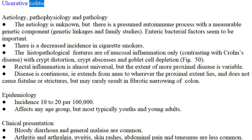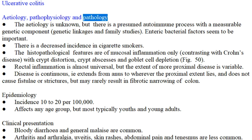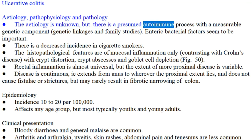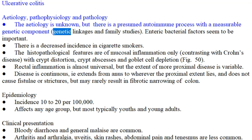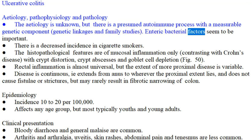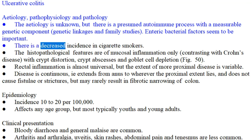Ulcerative colitis: Etiology, pathophysiology, and pathology. The etiology is unknown, but there is a presumed autoimmune process with a measurable genetic component, supported by genetic linkages and family studies. Enteric bacterial factors seem to be important. There is a decreased incidence in cigarette smokers.